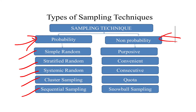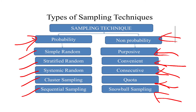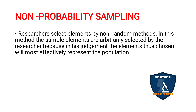Under non-probability sampling we are going to see purposive sampling, convenient sampling, consecutive sampling, quota sampling and snowball sampling. In this video we are going to discuss only non-probability sampling techniques. In my next video I will be posting about probability sampling techniques.